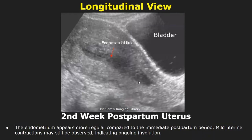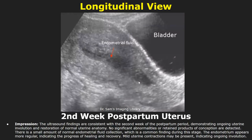The endometrium appears more regular compared to the immediate postpartum period. Mild uterine contractions may still be observed indicating ongoing involution. In the impression you can mention the ongoing involution and restoration of normal uterine anatomy, the small amount of normal endometrial fluid collection which is a common finding during this stage, the appearance of the endometrium, and uterine contractions if they are present.